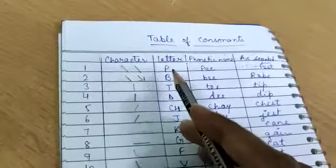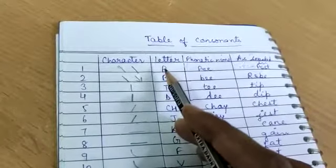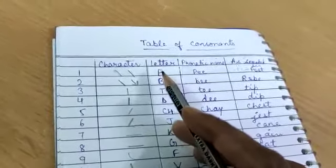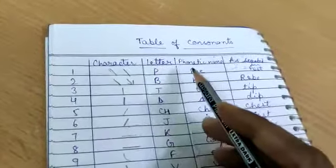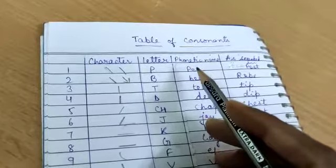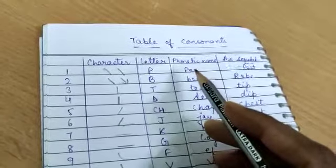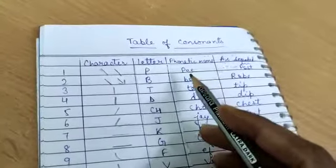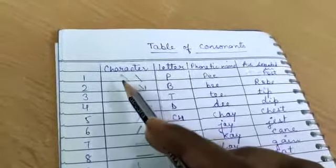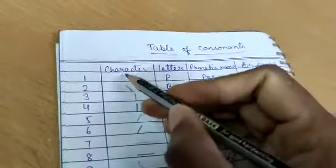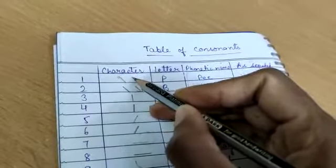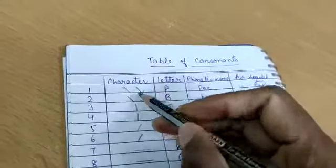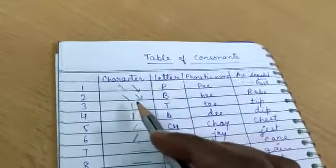Here you see P, letter is P. In English you have a letter P. Then in English shorthand you say P. Its phonetic name is P and it is written like this. This is P. It is made in downward direction.